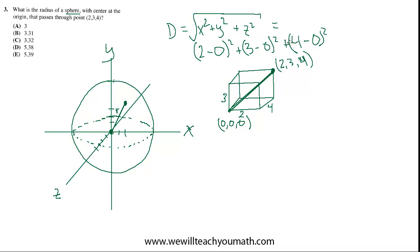But we don't really have to get into all of that because one of the points is the origin, so the minus zeros don't really do anything. So you could just do 2 squared plus 3 squared plus 4 squared. And then once we get that answer, we have to take the square root of it all.